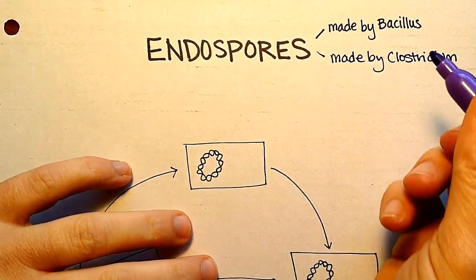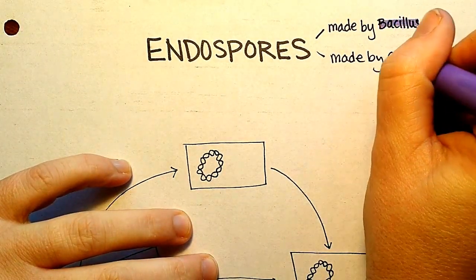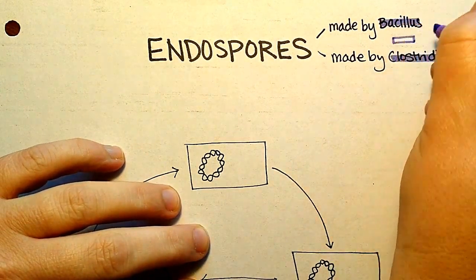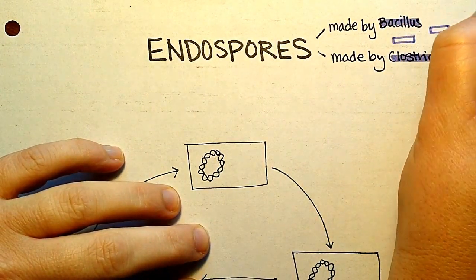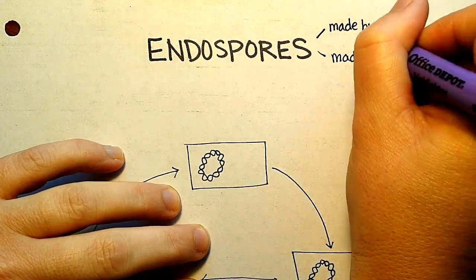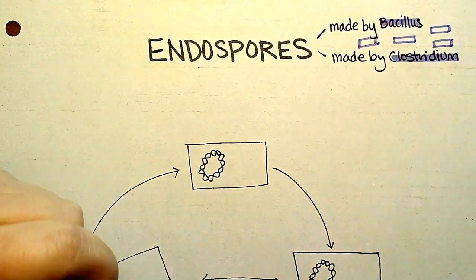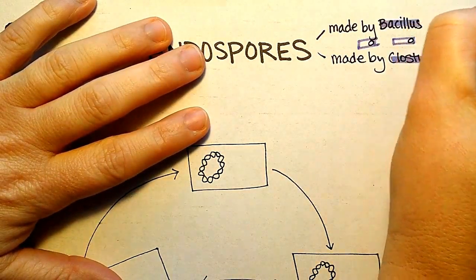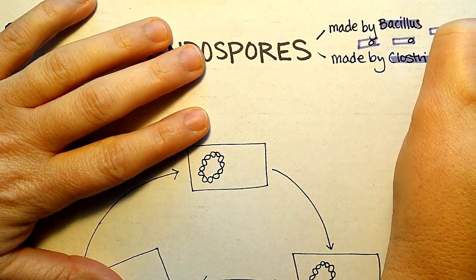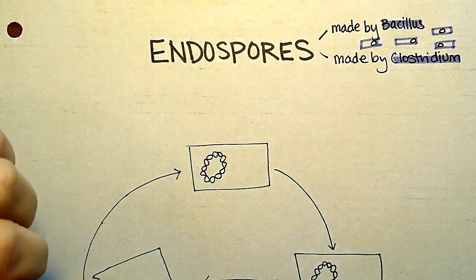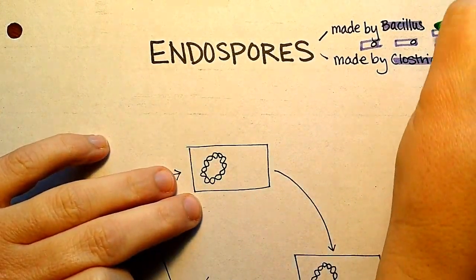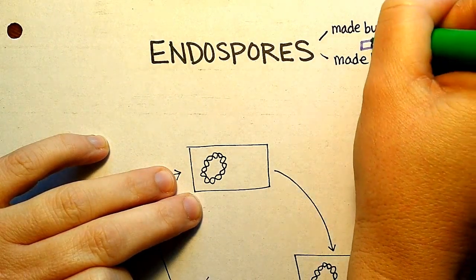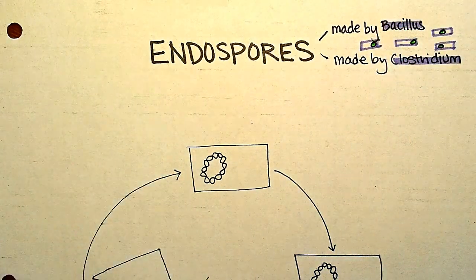They are both gram-positive rods. When they form endospores and you look at them under a microscope, you will see a clear spot where the endospore forms. You can put a malachite green stain on there and get a very pretty green endospore.